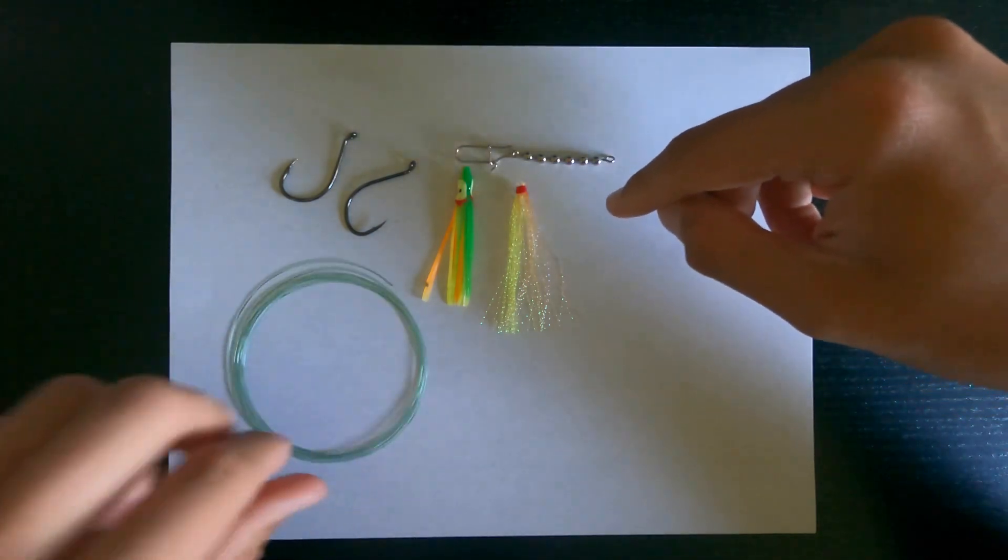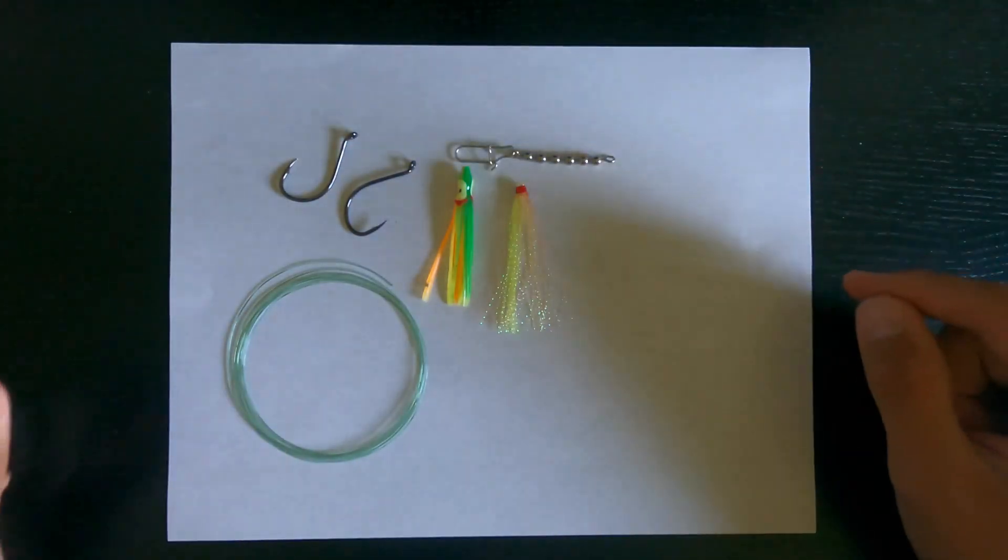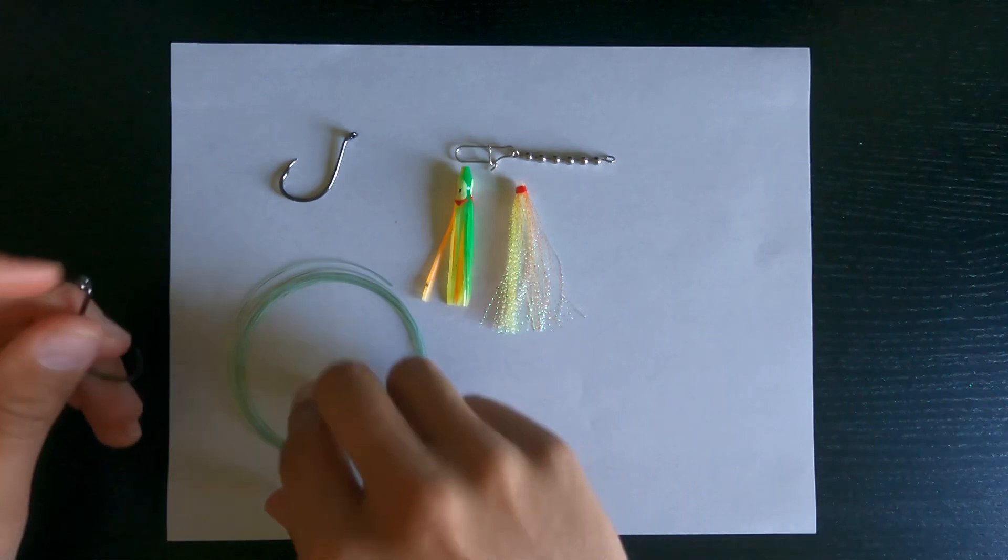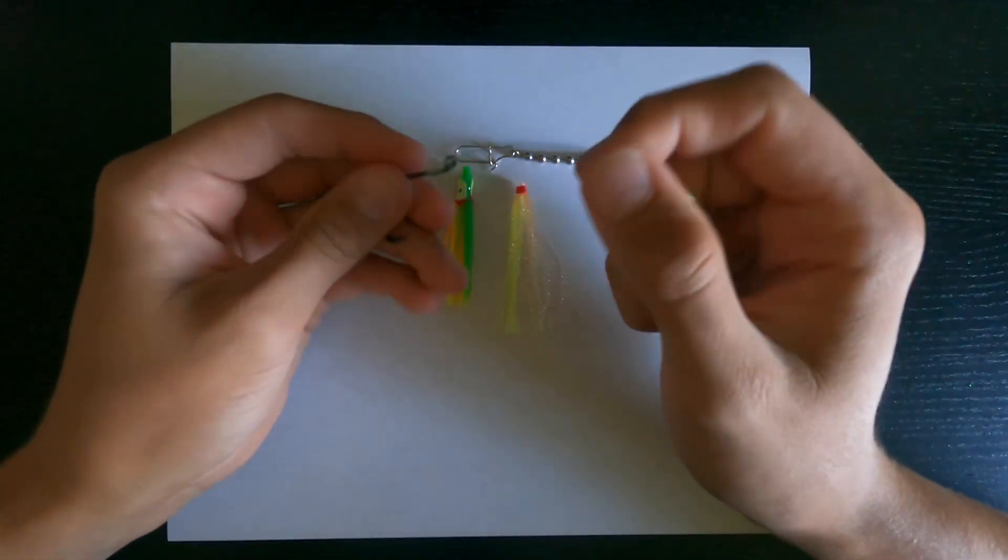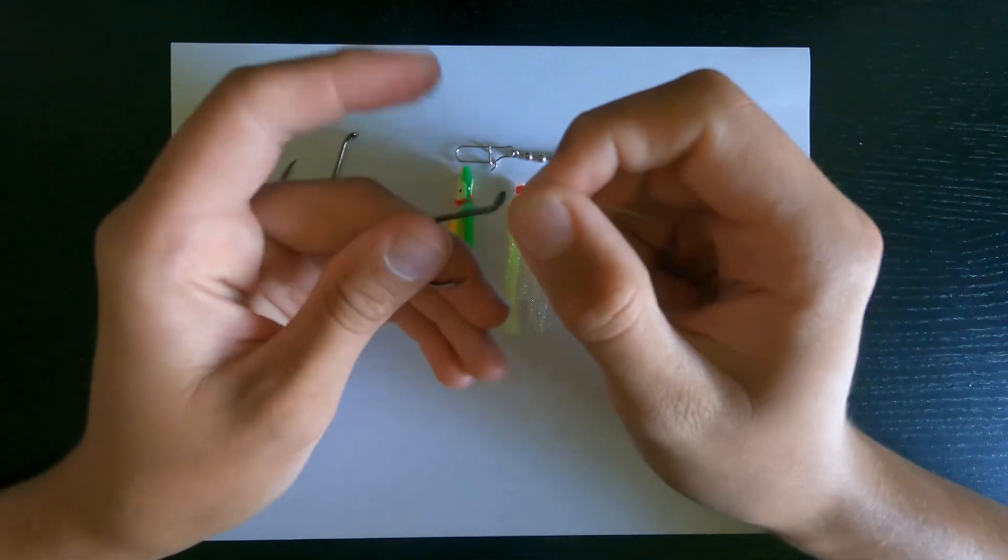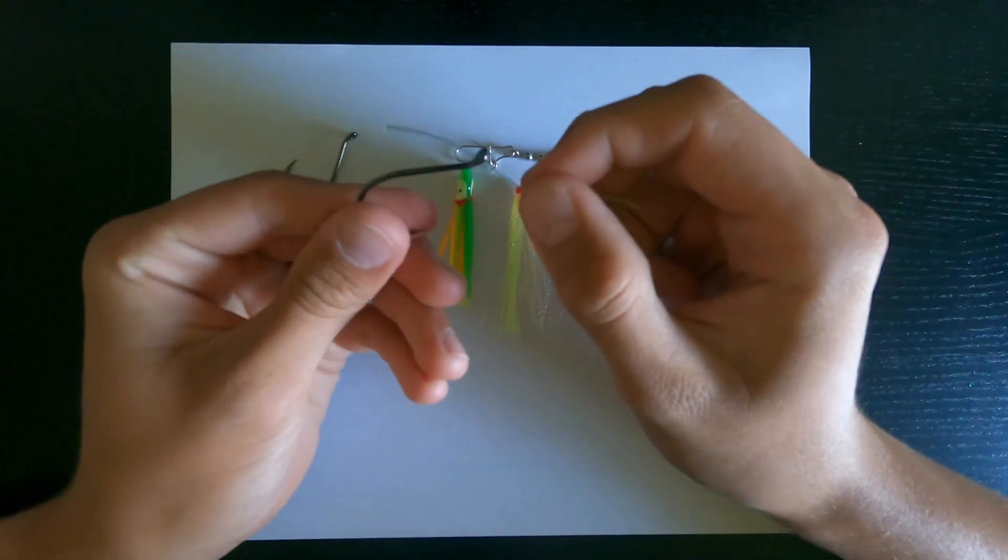And then I got my line, I got 40 pound mono here. So the first thing that I'm going to do is I'm going to take the end of my line and I'm going to thread it down the shaft of the hook just like that.